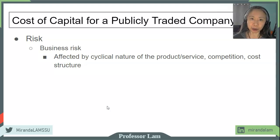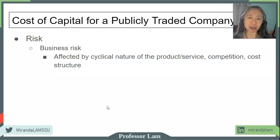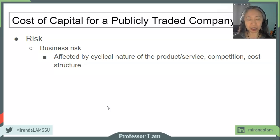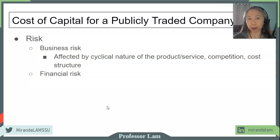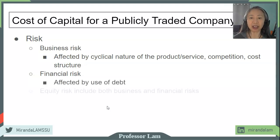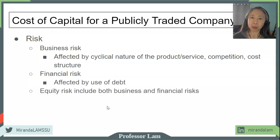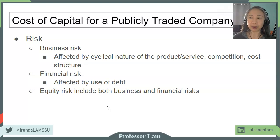Also regarding cost structure: an industry that requires a high fixed cost component will tend to have higher business risk because they'll have to continue to pay that high fixed cost regardless of the business environment. The second component of risk is financial risk, which has to do with how much leverage — how much debt — a company takes on. When we look at stockholders who are the equity holders, equity risks include both financial and business risk.